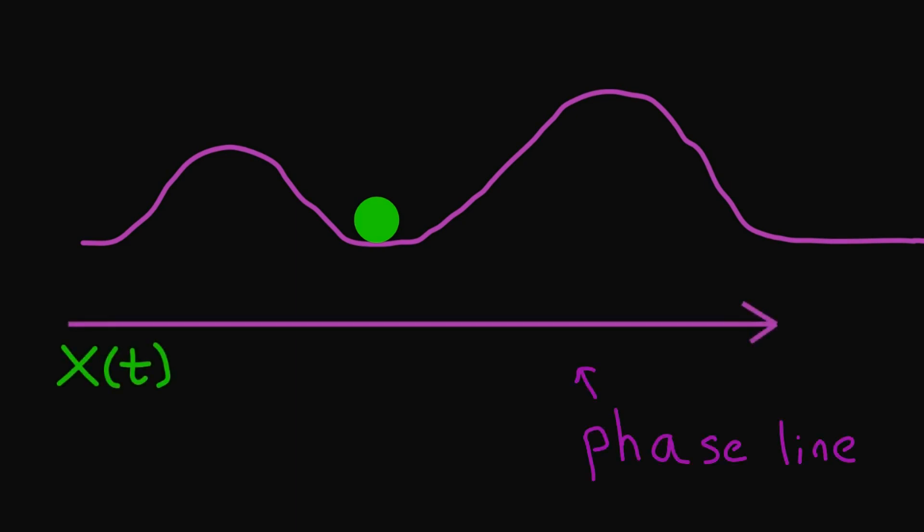Before we do that, let's build some intuition. Let's imagine some hills, and we place a ball at the bottom of the valley between the hills. We include a horizontal axis where x represents the horizontal position of the ball, and we think about how the horizontal position changes in time. So we have x as a function of t.